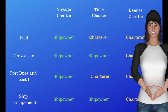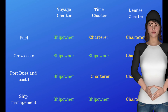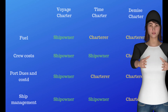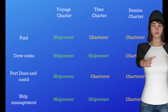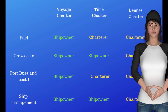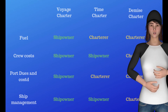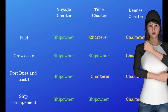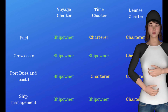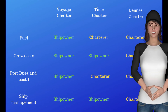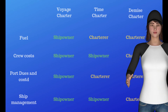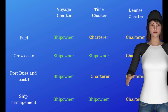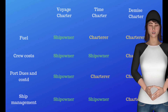Types of Charter Parties. One: In a demise, or bare boat, charter, the charterer takes responsibility for the crewing and maintenance of the ship during the time of the charter. He assumes the legal responsibilities of the owner and is known as a disponent owner. A demise charter operates as a long lease of the vessel, with the charterer completely in charge.